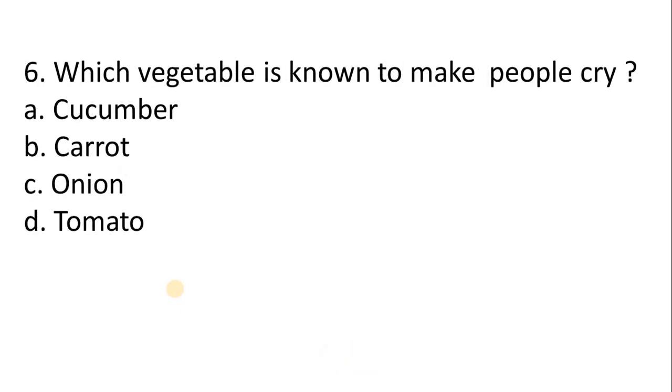Which vegetable is known as make people cry? A. Cucumber. B. Carrot. C. Onion. D. Tomato. Correct answer is option C. Onion.